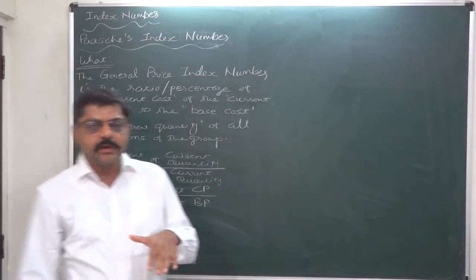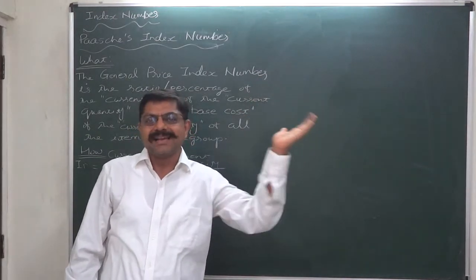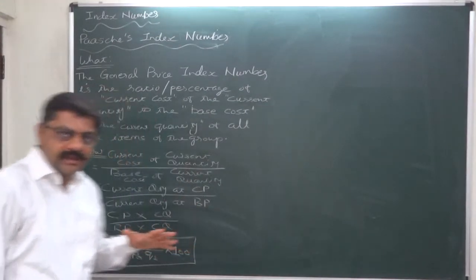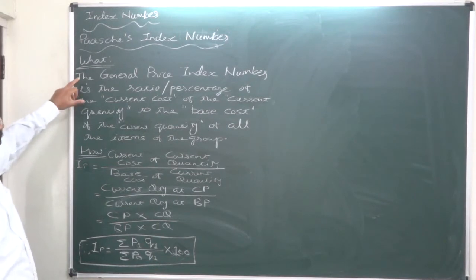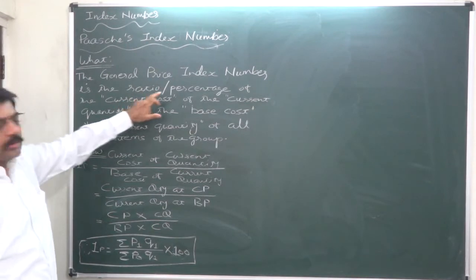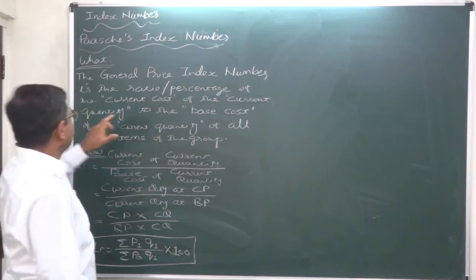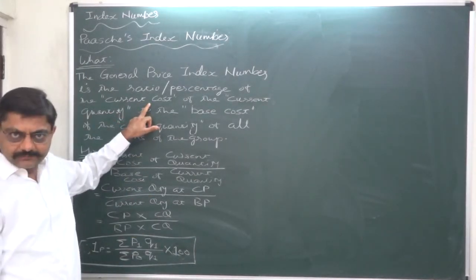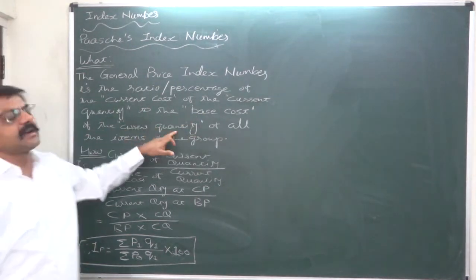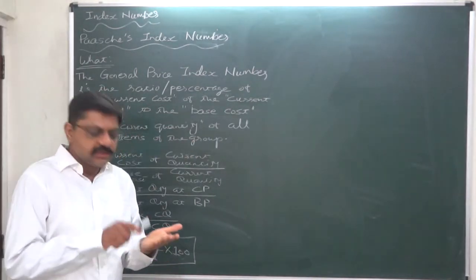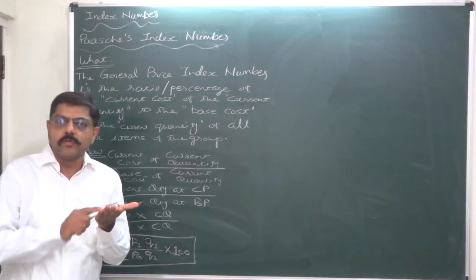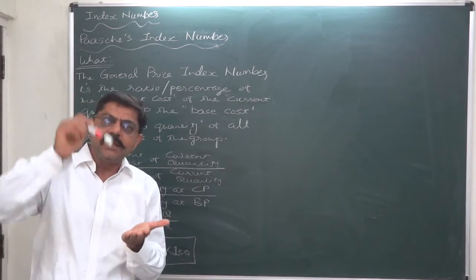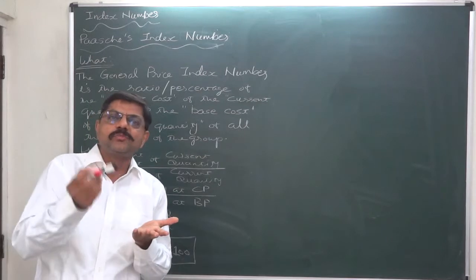That means the quantity of the current year is consumed at current year's price and base year's price. The general price index number is the ratio or percentage of the current cost of the current quantity — that means the quantity actually consumed during the current year is considered at its current cost — to the base cost of the current quantity of all the items of the group.